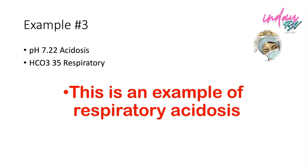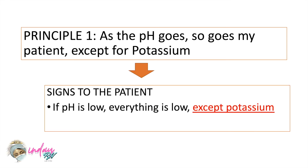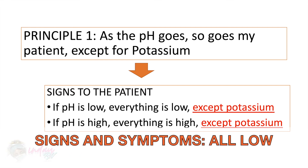Let's discuss principle number one: As the pH goes, so goes my patient, except for potassium. So if the pH is low, everything is already low, except for potassium. And if the pH is high, everything is high, except for potassium. So the potassium will always go the other way around. If your pH is low, expect that the signs and symptoms of the patient are getting low.